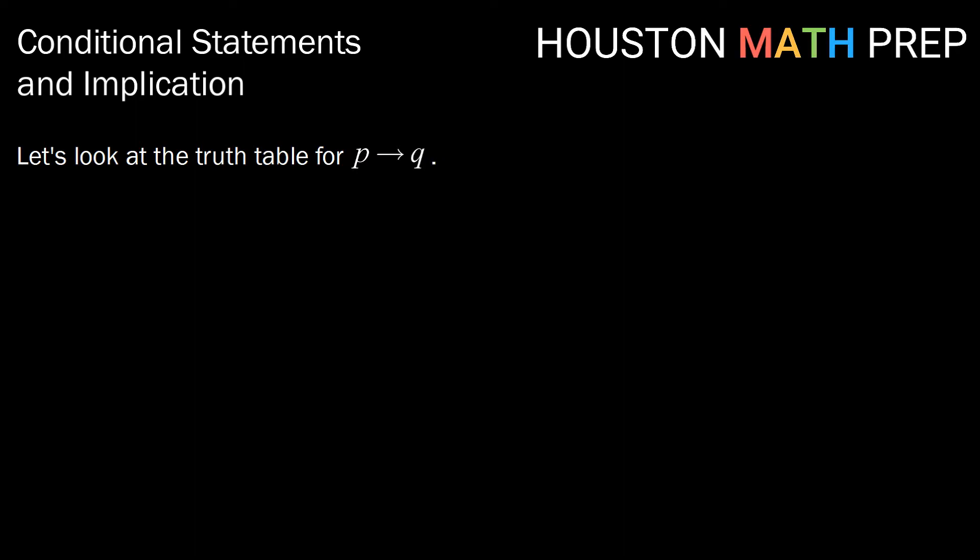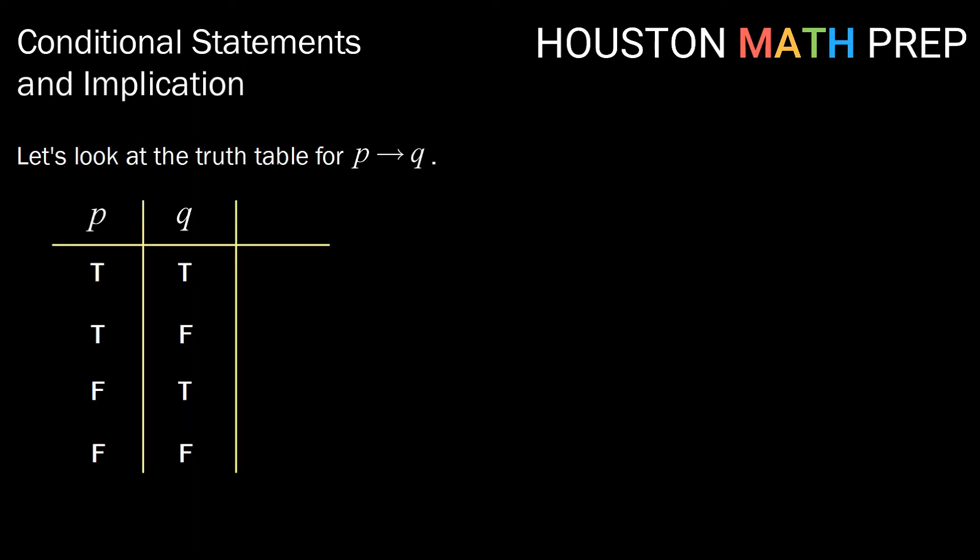So let's look at the truth table for our implication, P implies Q. We'll start with our normal true, true, false, false and true, false, true, false organization for P and Q. Then we'll take a look at how those create the truth values for P implies Q.